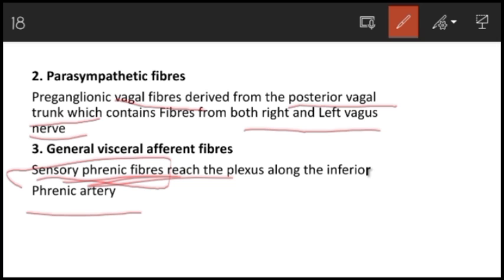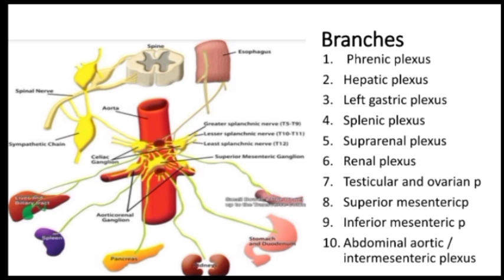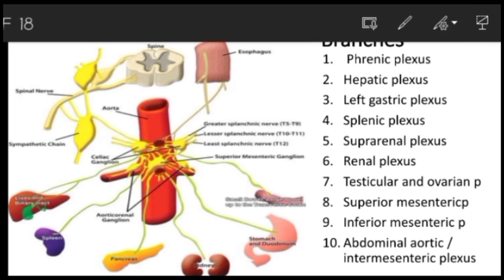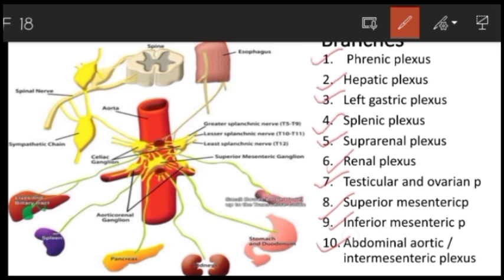The celiac plexus gives off numerous secondary plexuses which supply the abdomen and also the gonads. Its branches include the phrenic plexus for the diaphragm, hepatic plexus for the liver, left gastric plexus for the stomach, splenic plexus for the spleen, suprarenal and renal plexuses for the suprarenal glands and kidneys, testicular and ovarian plexuses for the gonads, and the superior mesenteric, inferior mesenteric, and intermesenteric plexuses. Of these, the hepatic plexus is the largest secondary plexus.